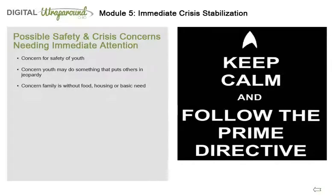Safety and crisis concerns may take many forms, but the two most frequent are concerns about the safety of the youth and concerns the youth may do something that puts others in jeopardy. Possible examples which may rise to the level of urgent crises may be the youth has a history of severe cutting, head-banging, suicidal gestures, assaults others, or acts out in a way that the parent feels an urgent need for help. Other times, the crisis is not related to the behavior of the youth — sometimes the crisis may be they have no food to eat or they are being evicted. The facilitator takes the lead from the caregiver if the situation is a crisis for them.